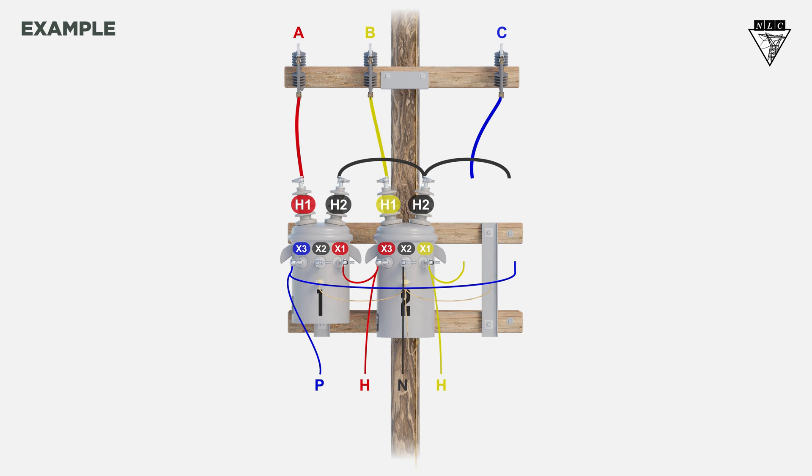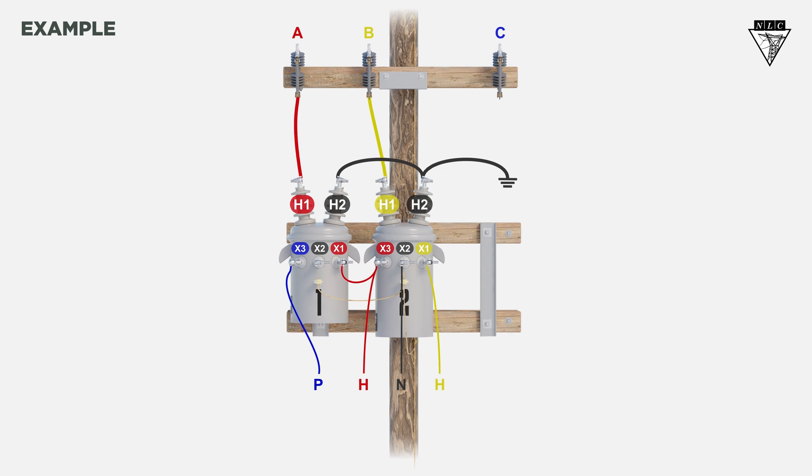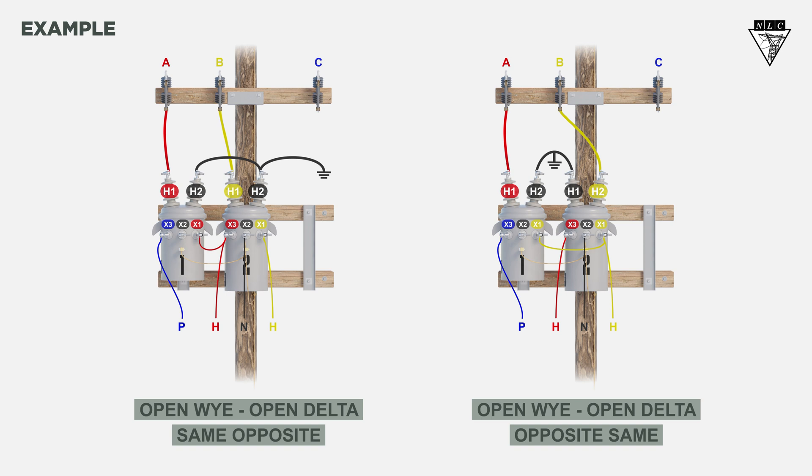Additionally, since a Y-delta bank is a bank of single-phase units, they can be reconnected as an Open Y Open Delta to supply power to the customer temporarily before a permanent solution is made. There are two ways to connect an Open Y Open Delta on the secondary side. To learn more, check out our Open Y Open Delta Banks video.